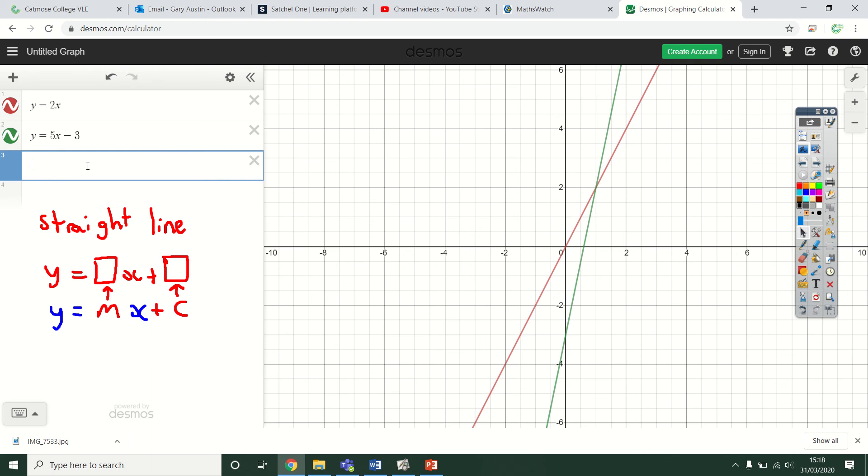Let's change it again. y equals, I'll make the x negative this time, minus x minus 1. That's that purple line there. What that means is my m value, because it's minus x, is the same as minus 1x. So my m value would be minus 1 and the c value would be minus 1 as well.